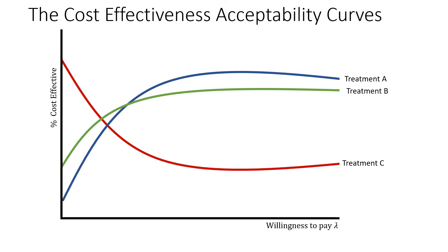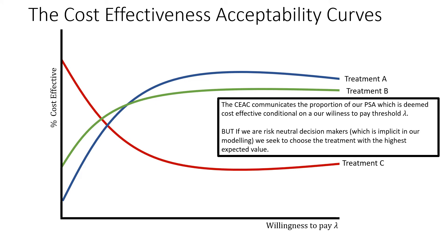In this case we've plotted three curves just to illustrate what is to come. The cost-effectiveness acceptability curve communicates the proportion of our probabilistic sensitivity analysis which is deemed cost effective, conditional on our willingness-to-pay threshold lambda. But if we're a risk-neutral decision maker — which is implicit in our modeling — we seek to choose the treatment with the highest expected value. So how do we preserve this without losing the detail of the proportion of cost-effective scenarios?